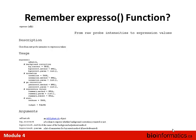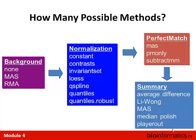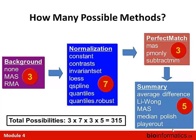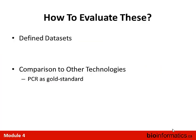The Expresso function allows you to take very large sets of normalization methods. These are all the things that are enabled by default in Expresso — 3, 7, 3, and 5 — so if you quickly do the math, there are 315 ways of processing your data using the AFI package alone. The AFI package is not the only way, and I do not recommend processing your data 315 different ways. But how do you even evaluate that? How do you identify if one technique is better than another?